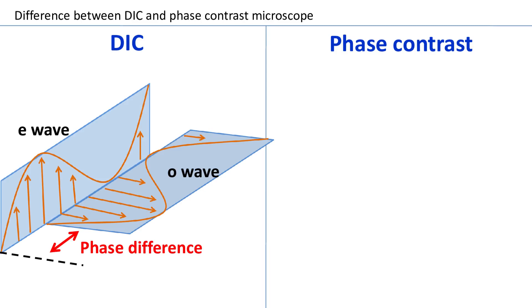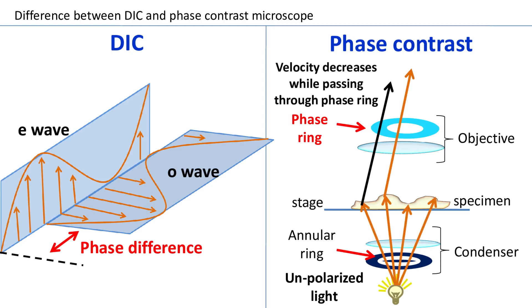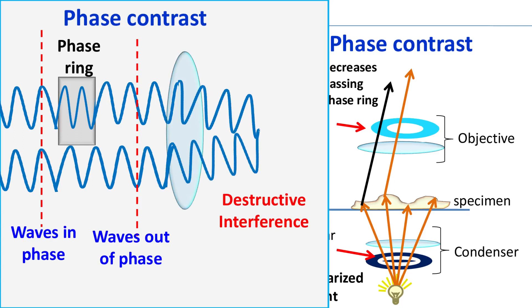In the case of phase contrast microscope, the light used is not polarized. When this light passes through the specimen, there is a decrease in its velocity. If the ray of light coming out of the specimen hits the phase shifting ring, there is a further decrease in its velocity. Finally, when these waves are combined by the eyepiece, two things happen: the ray coming from the phase ring undergoes destructive interference because of its decreased velocity and phase shift — and this region of the specimen is seen as dark. The ray of light that fails to hit the phase ring will not undergo destructive interference, and this region of the specimen is seen as bright.